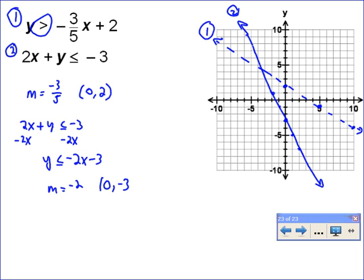So now we've got to test points and it's easiest to test zero-zero to see which is true. So we'll start with one. If we put in zero-zero, we get zero greater than zero plus two. Well, zero is not greater than two. So for line one, zero-zero is false.